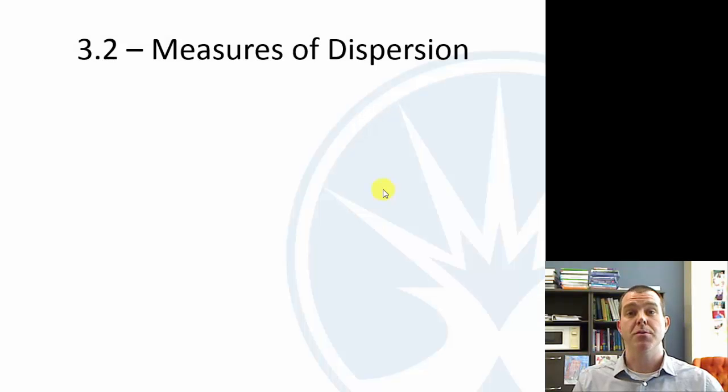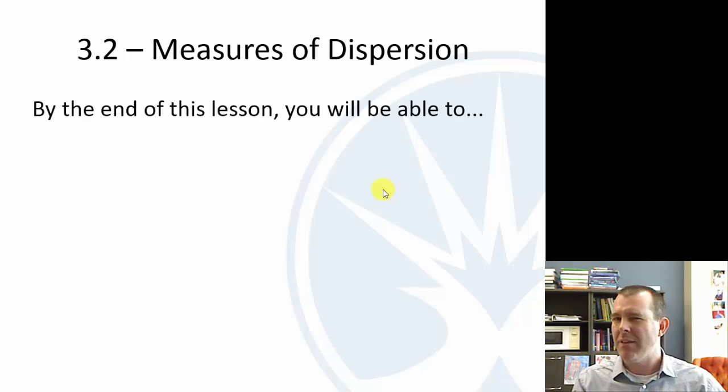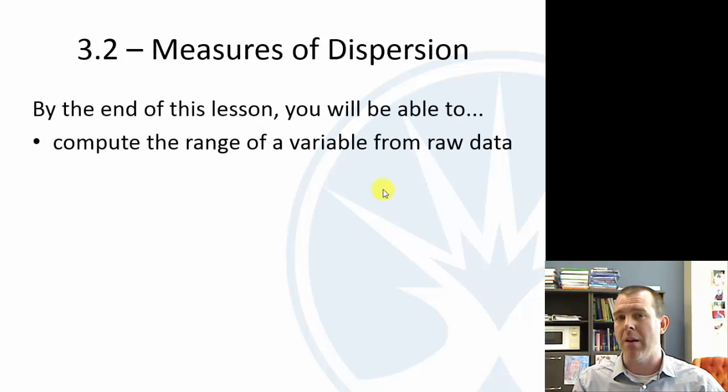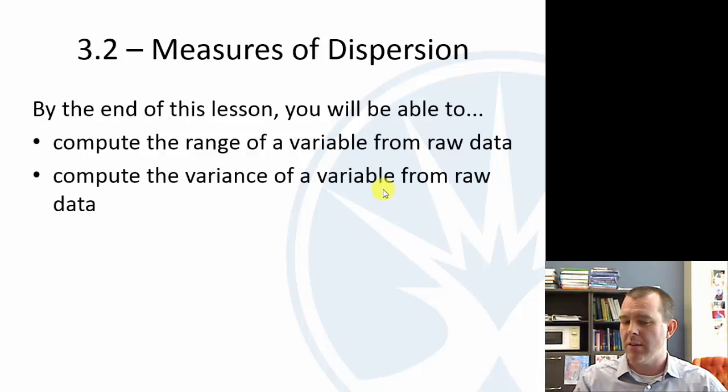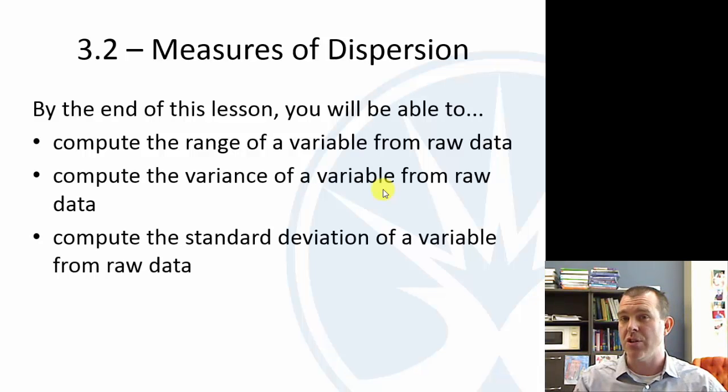Okay, now measures of dispersion, which is like spread, how spread out are the data. We've got to dive a little bit deeper here. We're going to talk about a statistic called the range, the variance, and standard deviation.